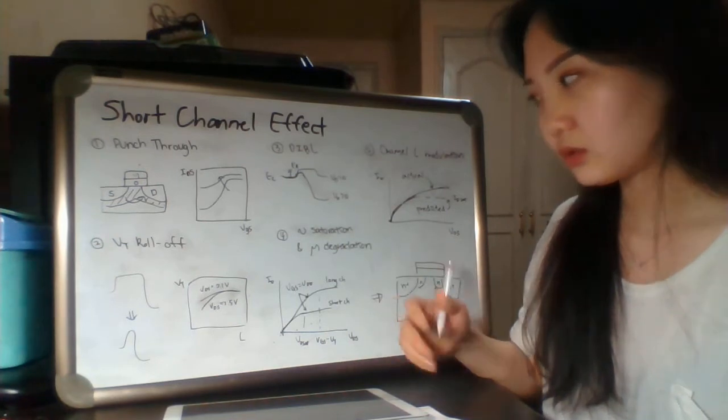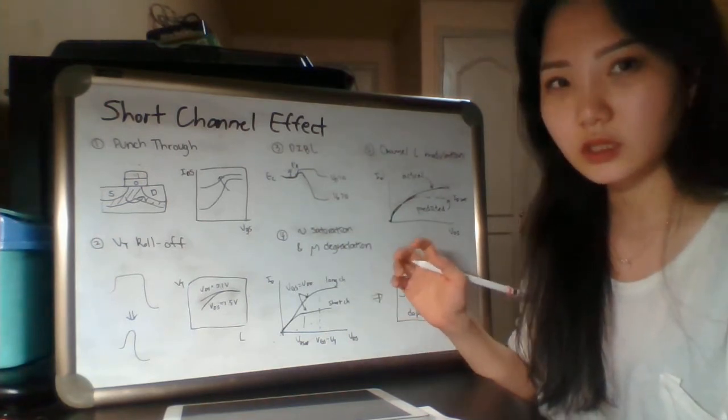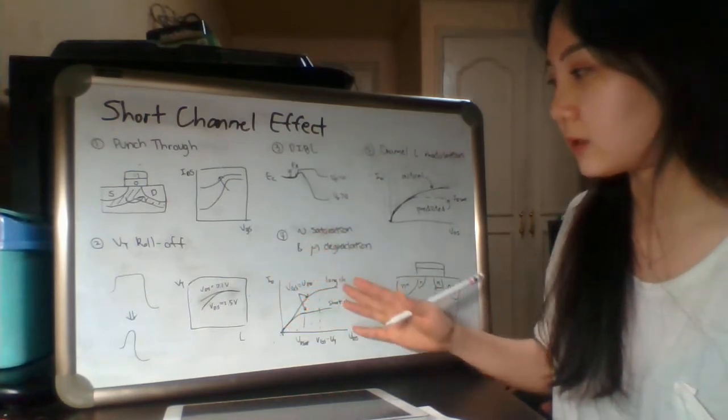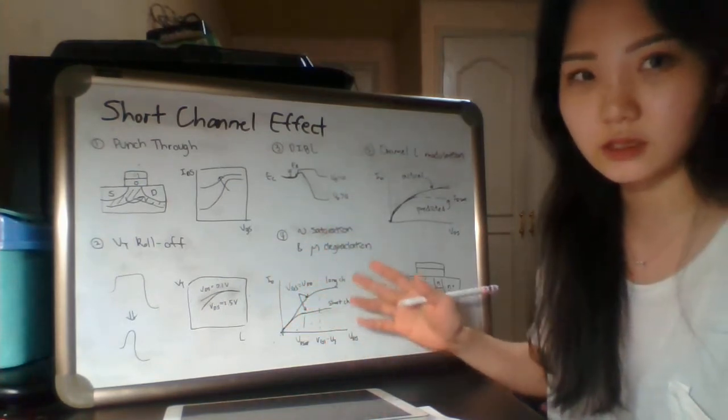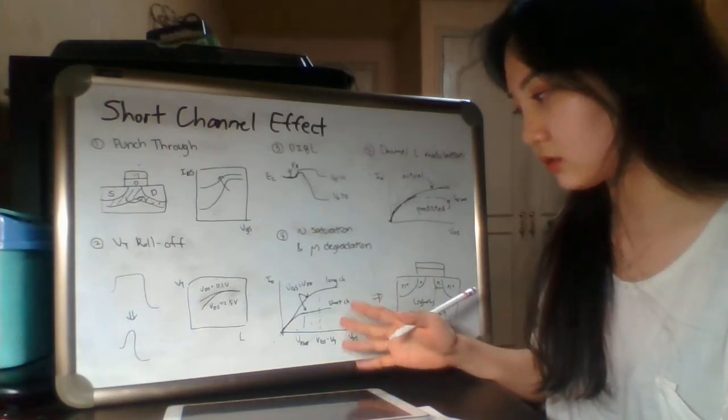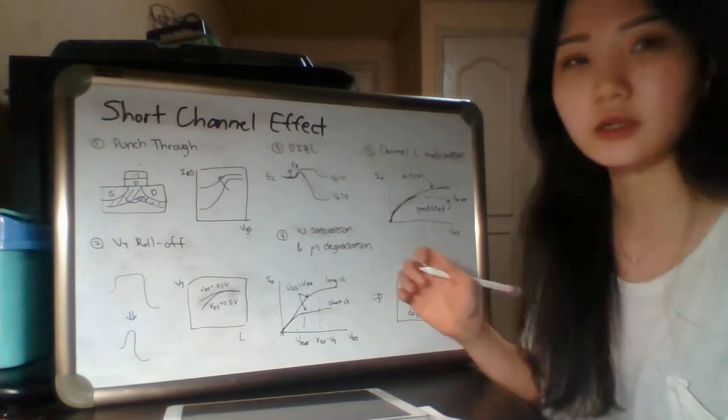In short channels, velocity saturates, so the drain current ID cannot increase in the saturation region. This also causes mobility degradation.